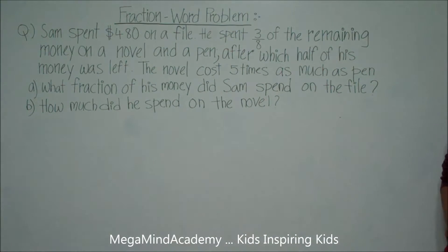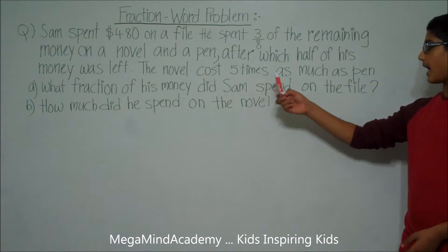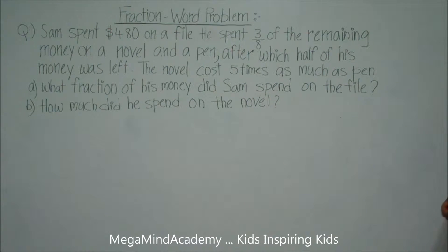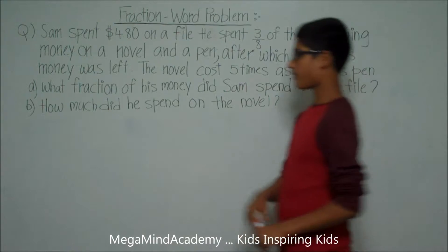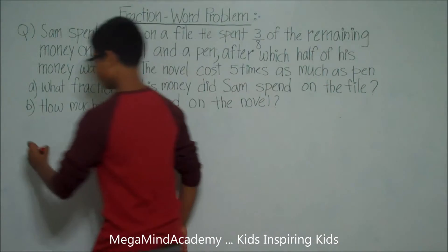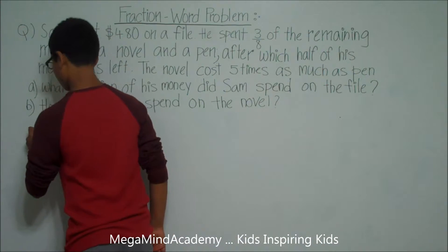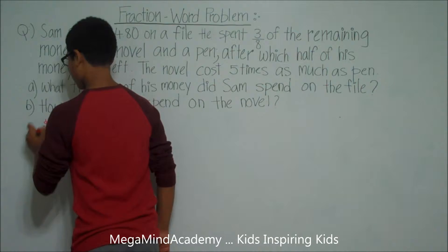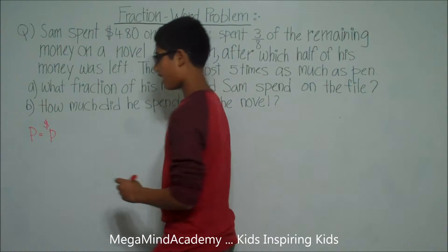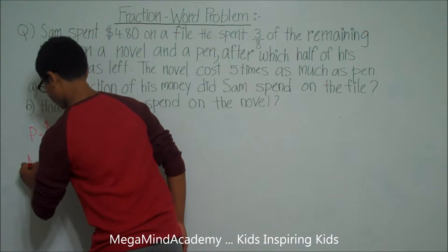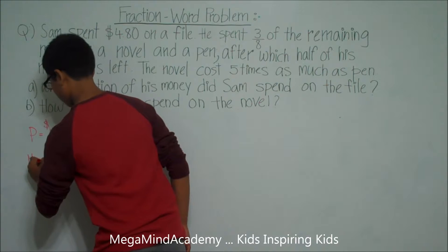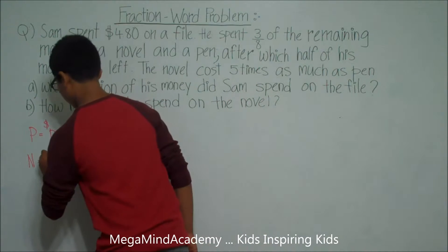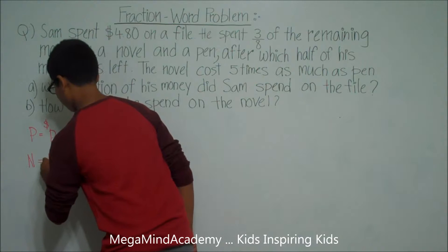The problem states that the novel costs five times as much as a pen. So let's say that the pen costs P dollars. This means that the novel costs five times as much as the pen, which is equal to 5P dollars.